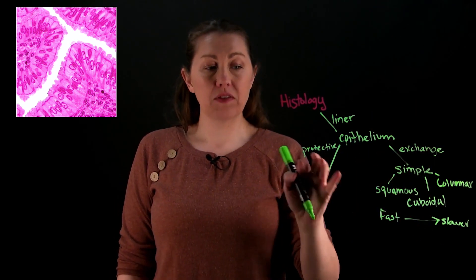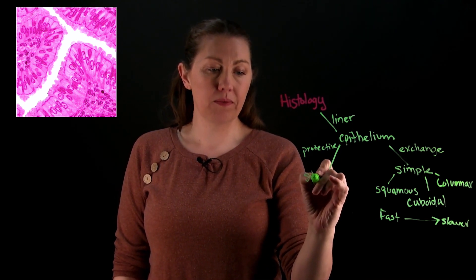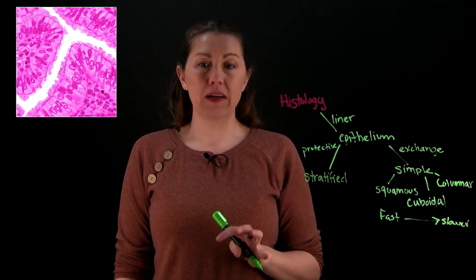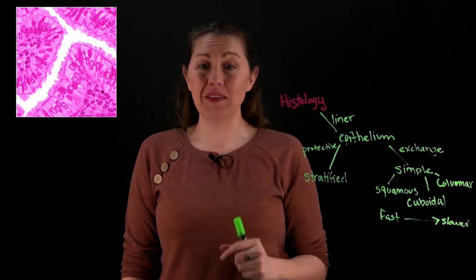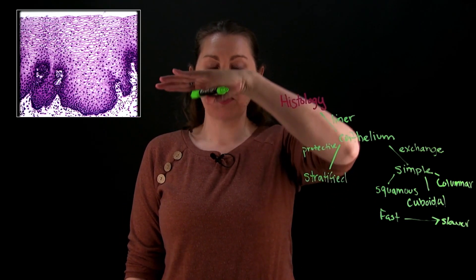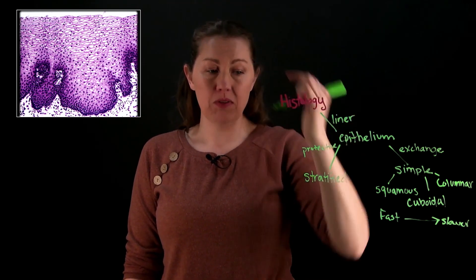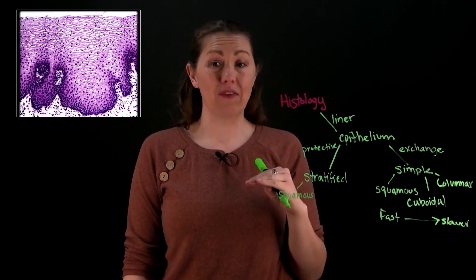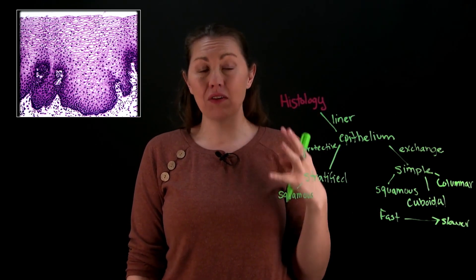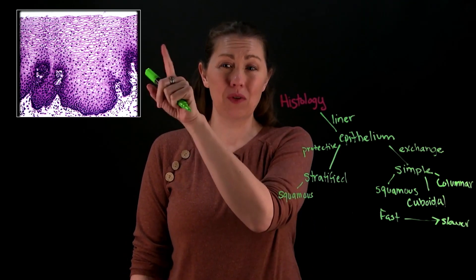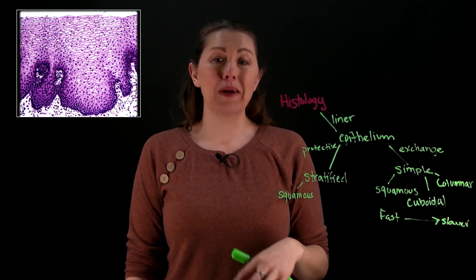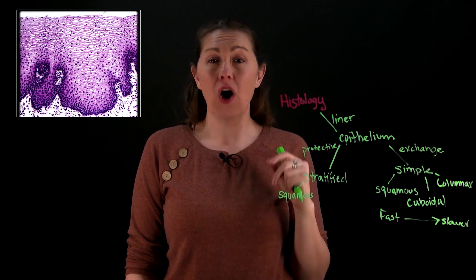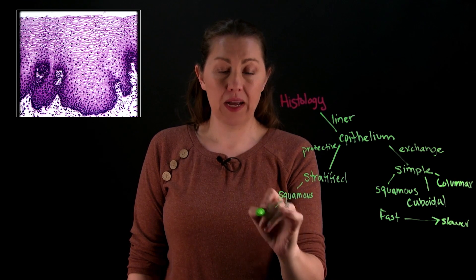For protective functions, epithelium is going to be stratified — multiple layers — and uses the same shape categories as before. It can look tricky because cells appear different at different layers, but you always name it for the shape you see at the top. Stratified squamous has the most cell layers and is great for areas with lots of rubbing; shed the top few layers and you're not worried because there are tons below. The non-keratinized version has nuclei all the way to the top — all living cells — found in moist areas like the mouth, esophagus, anus, and vagina.